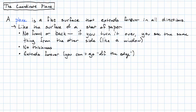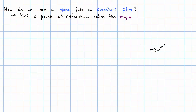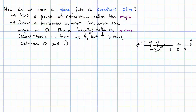How do we turn a plane into a coordinate plane? The first thing we do is we pick a point of reference called the origin. Then we draw a horizontal number line with the origin at zero. Just like a number line, we label some of the numbers. Notice we haven't labeled all the numbers — just because we don't have a label at, for example, the number three-fourths, doesn't mean three-fourths doesn't exist on our number line. It just means that we haven't made a mark at it.